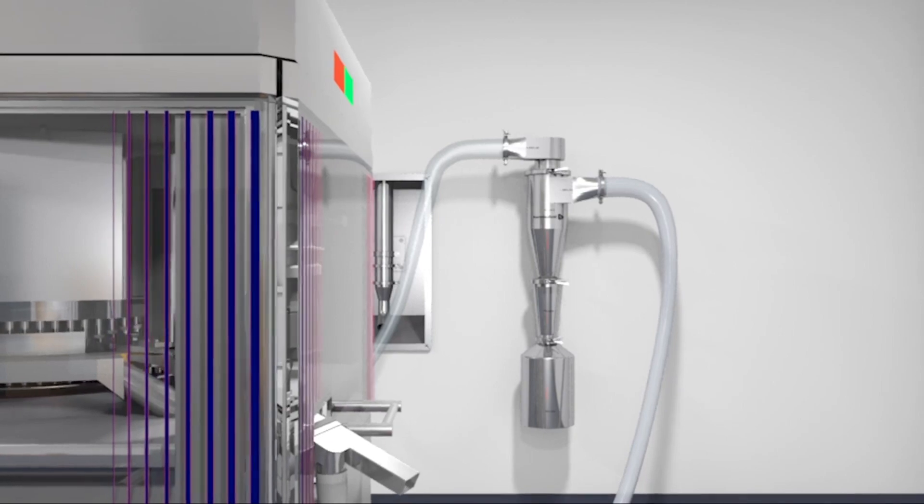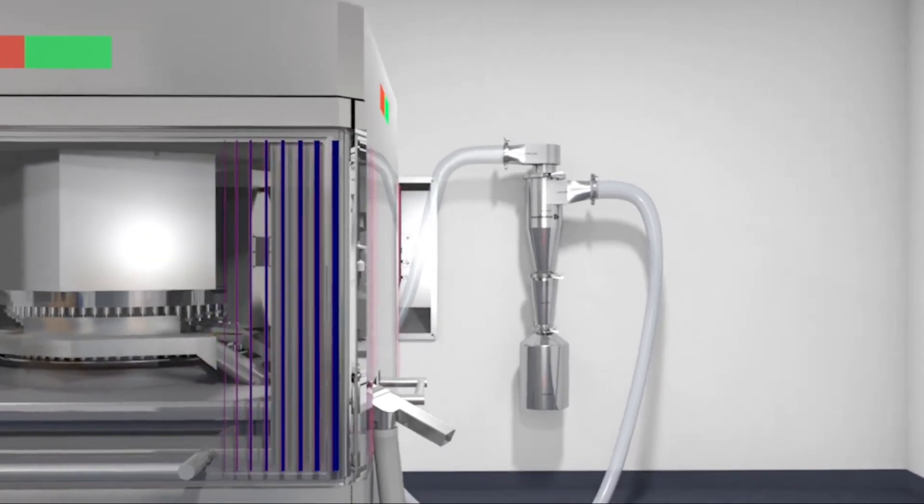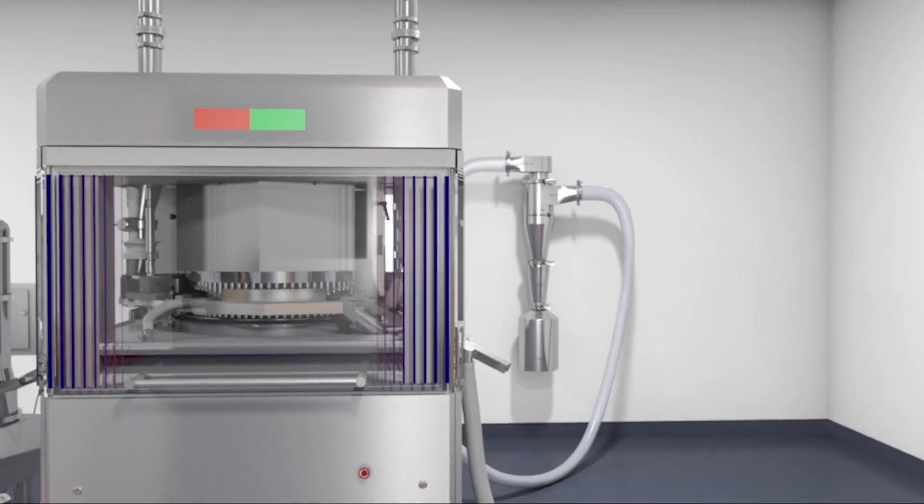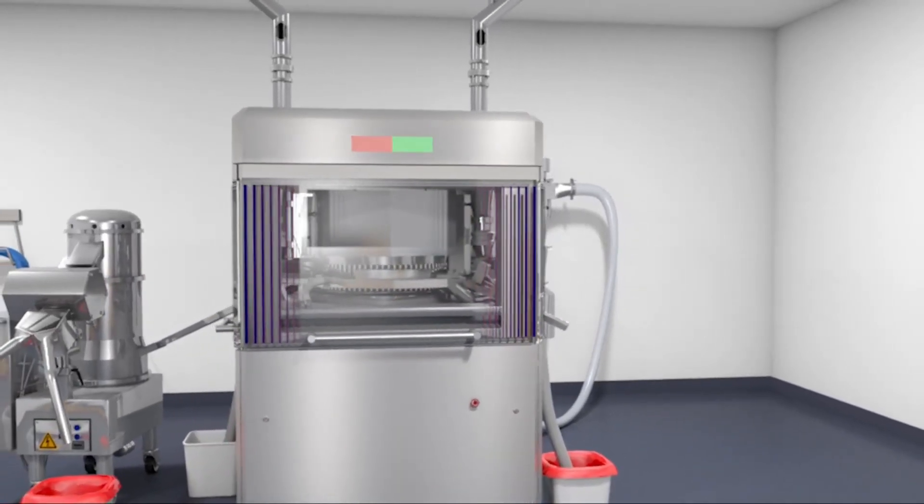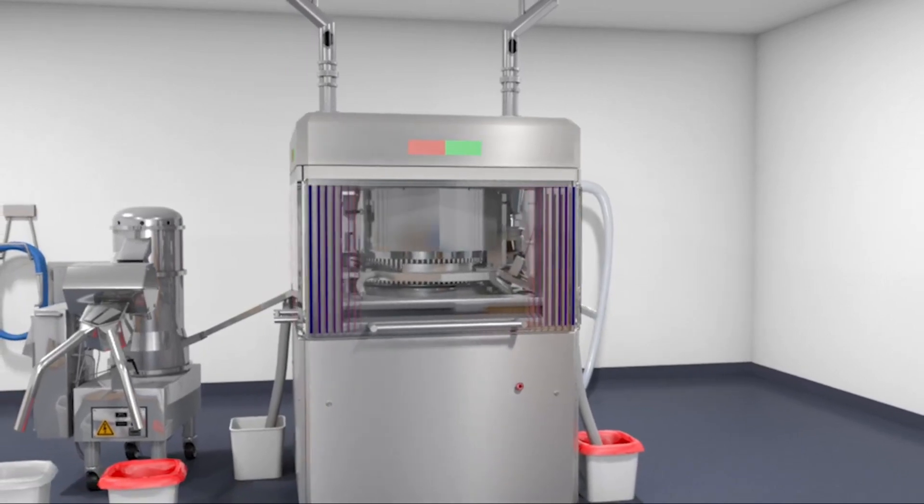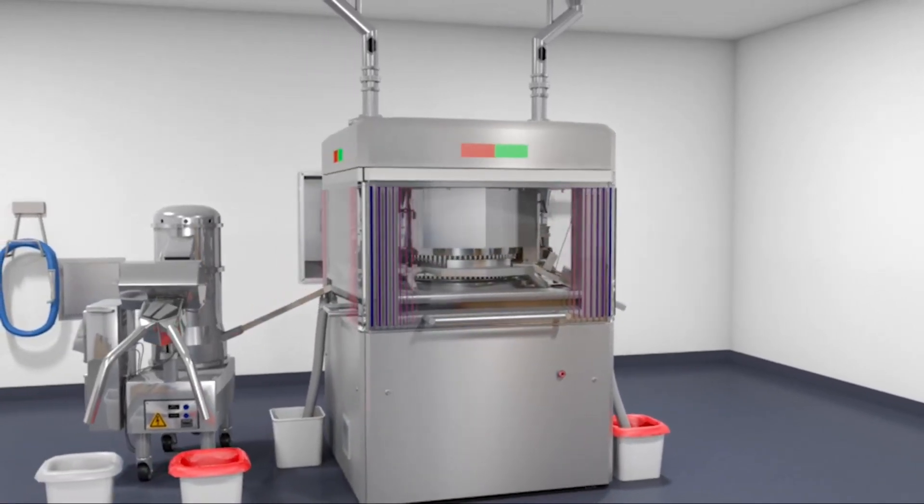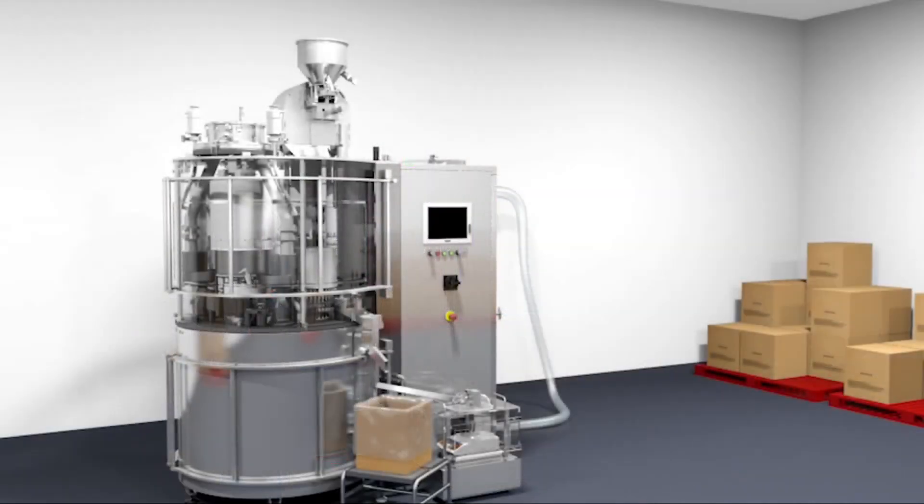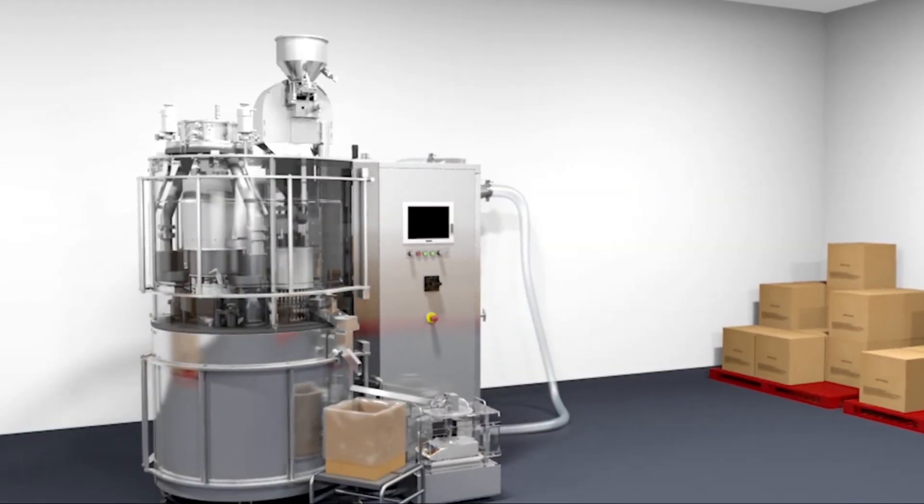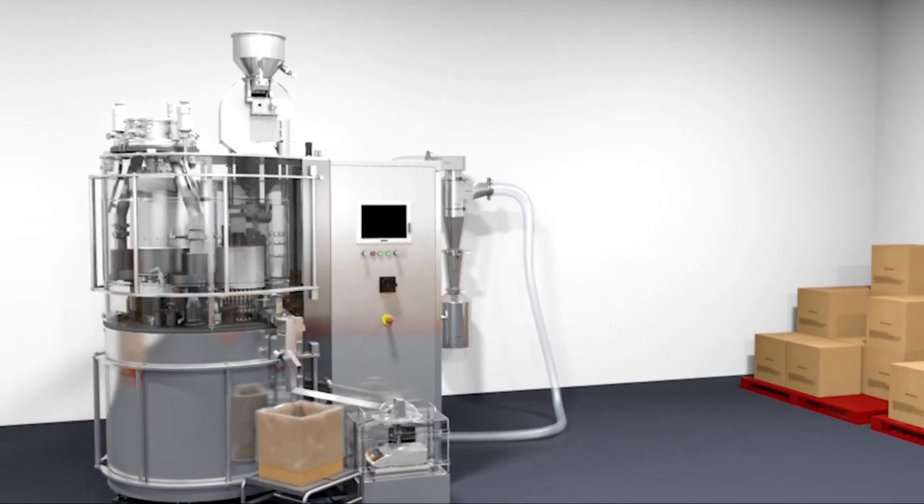The Hanningfield Unidust Cyclone has been successfully installed onto various industry standard compression machines such as Fette, Manesty, Korsch, Hata, and Stokes, and capsule filling machines such as MG2, Bosch, Killian, Zanasi, IMA, and many more.